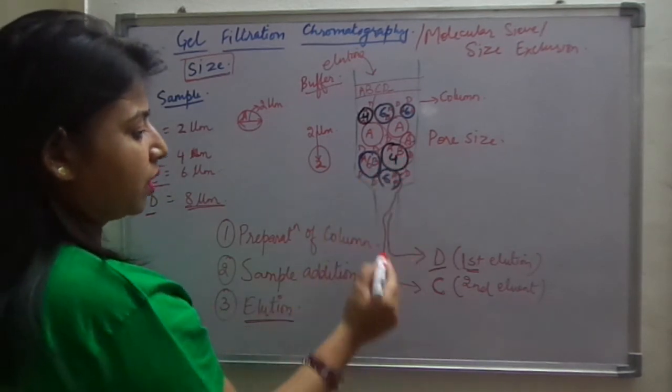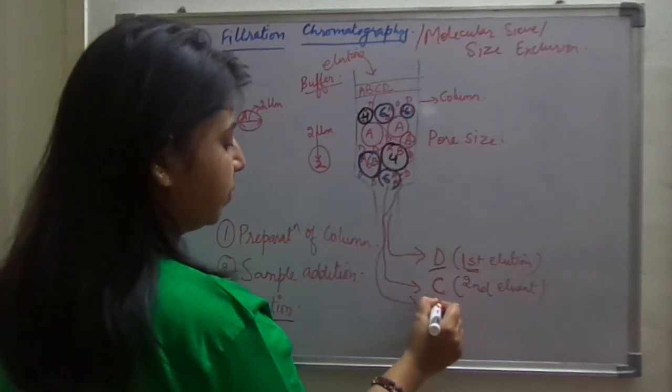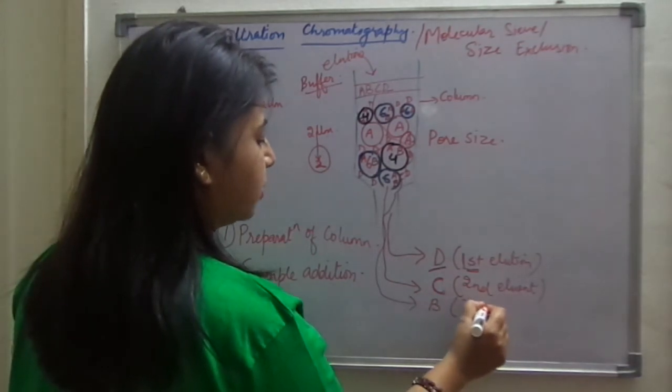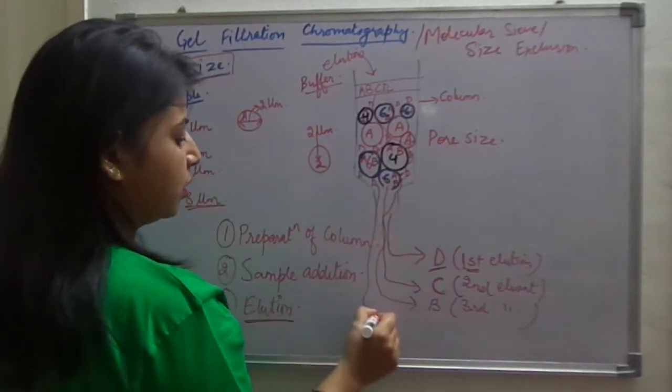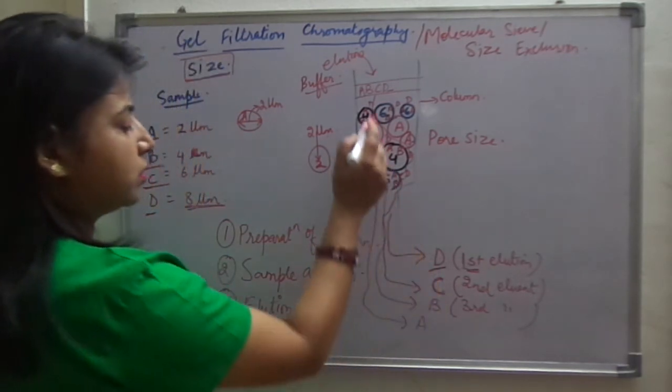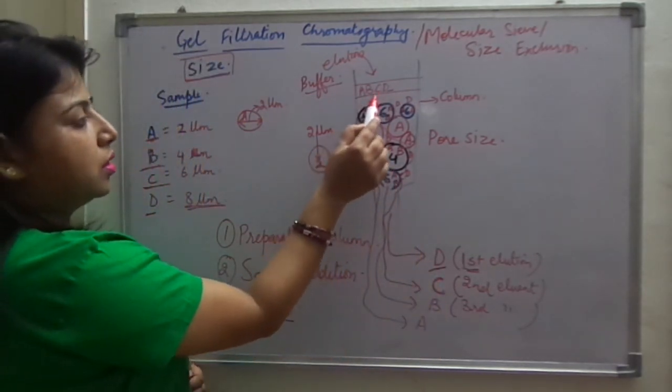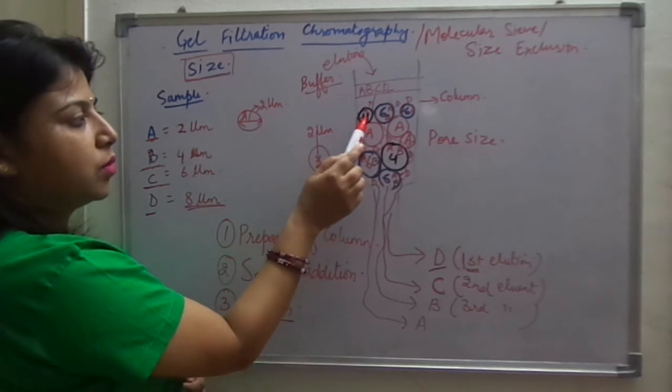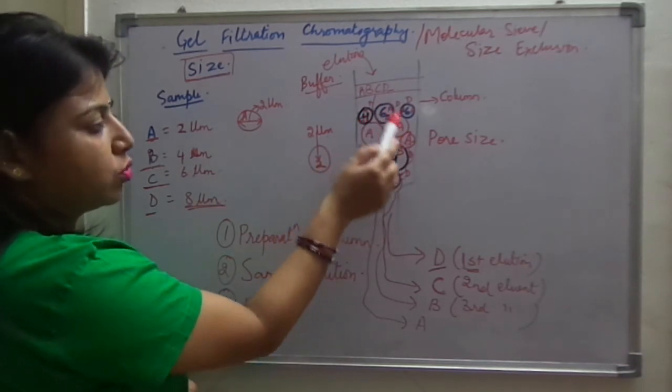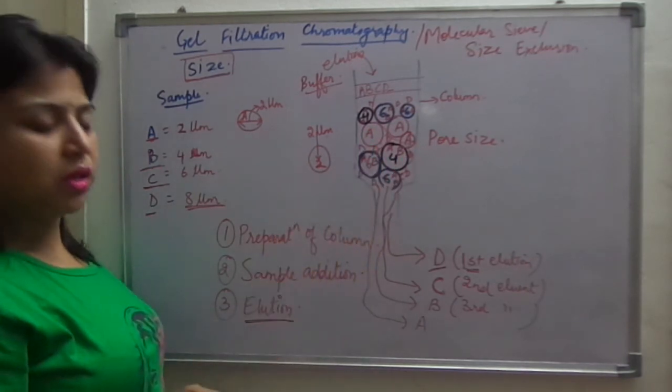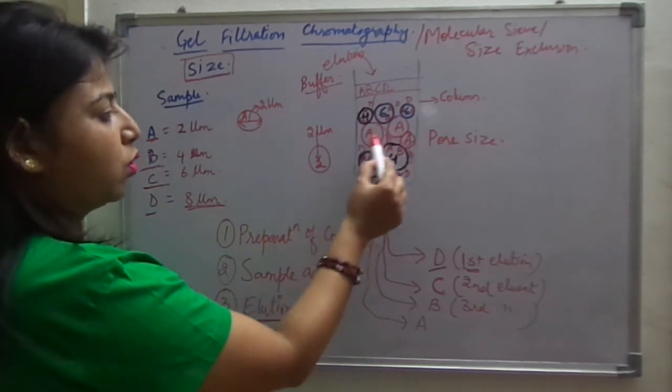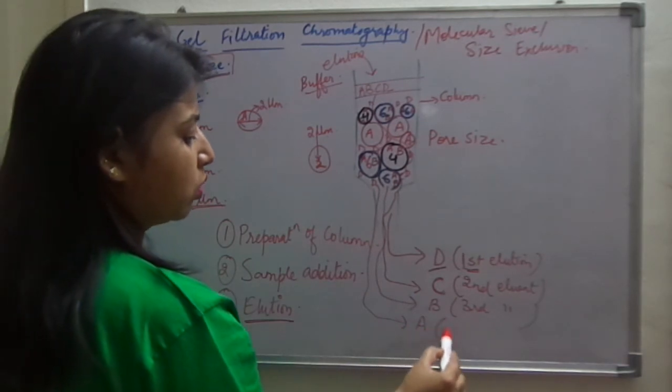Coming to third one is B, third eluant and last one is A which is the smallest component. See, look at A, when it comes over here, comes in one bead, then in second, then in third, in fourth, it will go, it will travel the largest space inside this column. Because it is traveling a lot of space, so it will come out of the last.